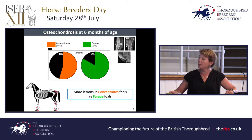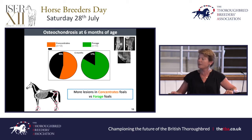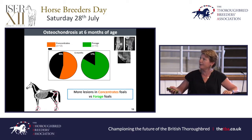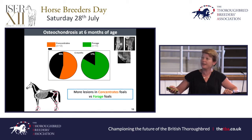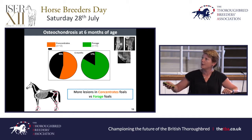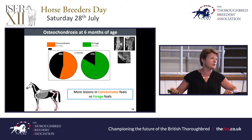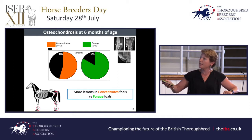So it seems there was adaptation of the placenta to maternal restriction to ensure fetal growth. We did a complete panel for osteochondrosis in those foals. In the concentrate group, 45% of foals had osteochondrosis, whereas only 17% in the forage group.